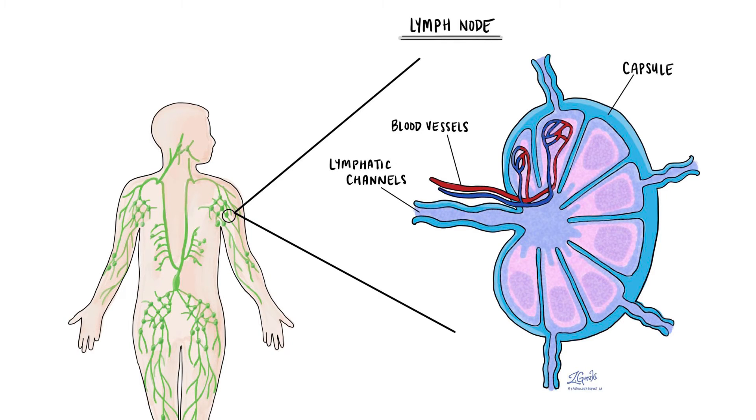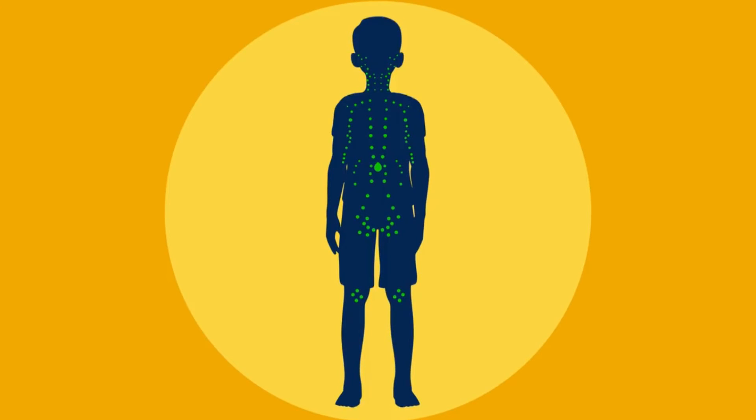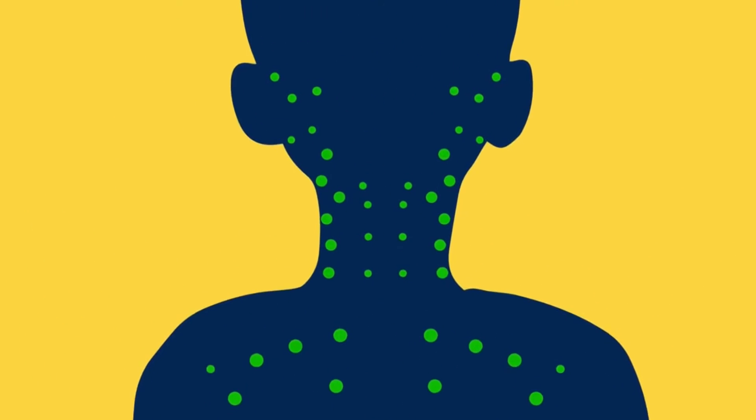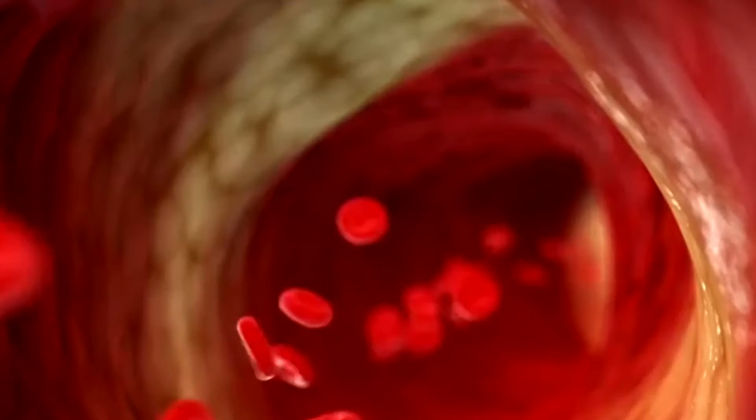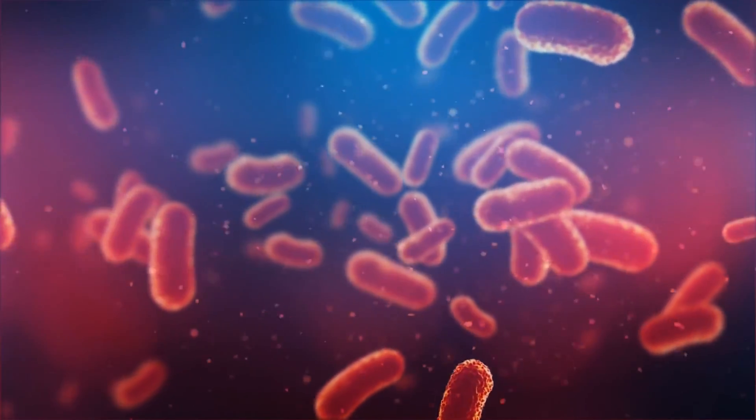The vessels branch through junctions called lymph nodes. These are often referred to as glands, but they are not true glands as they do not form part of the endocrine system. In the lymph nodes, immune cells assess for foreign material, such as bacteria, viruses, or fungus.